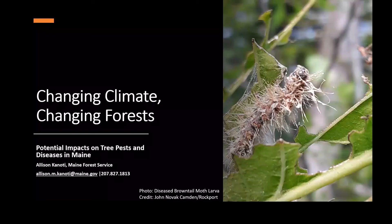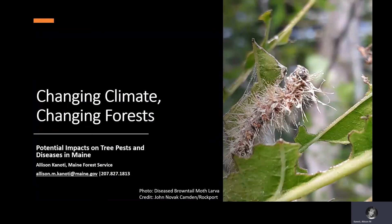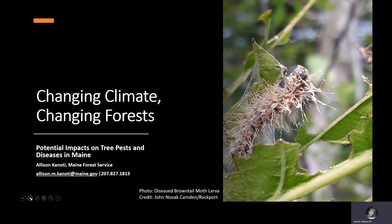I'm Allison Knody and today I'm going to talk about the impacts of climate change on some of the insects in our forests. We're going to start by focusing on brown-tailed moth. This caterpillar is an example of a brown-tailed moth larva that has been infected with Entomophaga alicae, which is a disease organism whose intensity is related to weather patterns.